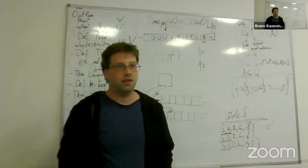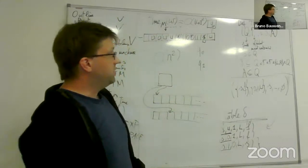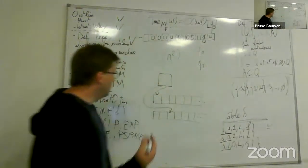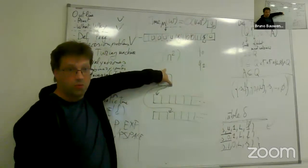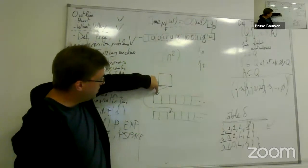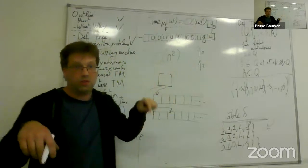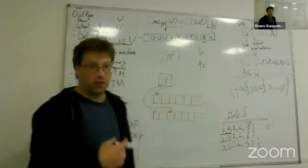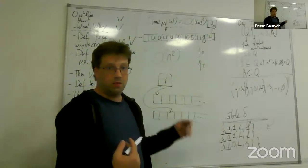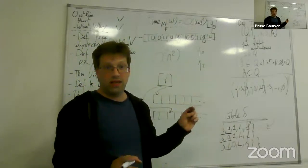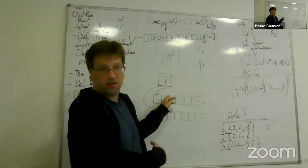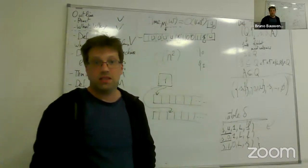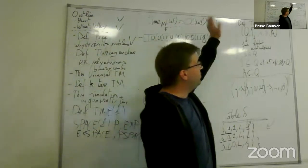For a two-tape Turing machine, everything in the definition remains the same except the transition table. The computation head reads two symbols from two cells, decides what to write in both cells, and where to move each head independently — for example, right on tape 1 and left on tape 2. With a two-tape machine we can decide palindromes not in quadratic but in linear time.